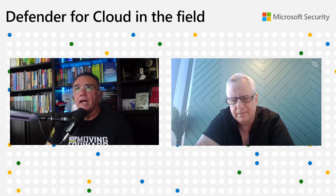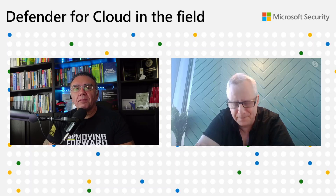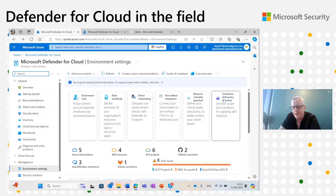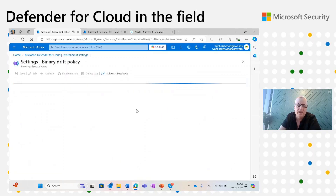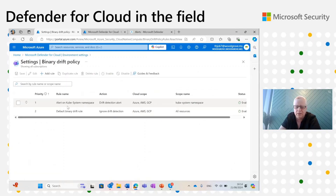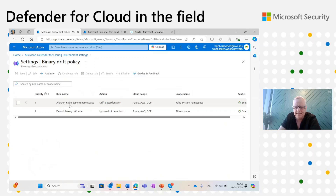We've heard from customers a lot about the need for this capability. I'm very curious to see the demo — let's switch to it. It's currently in public preview and going GA soon. When I click on that, I get two rules provided out of the box. One is a template rule where you can decide whether to use it or modify it — it states that you want to receive a binary drift alert on the kube-system namespace, which is a very sensitive place to have drift.